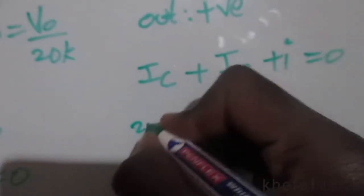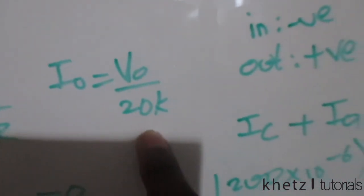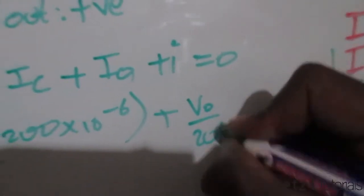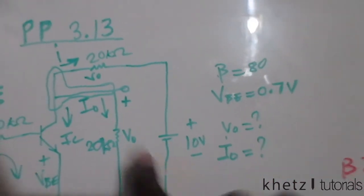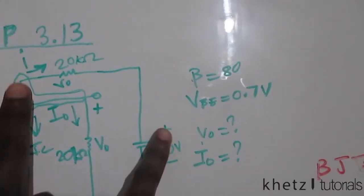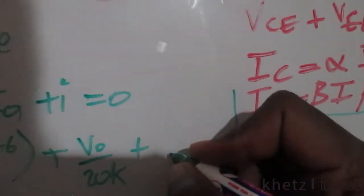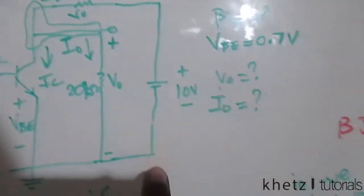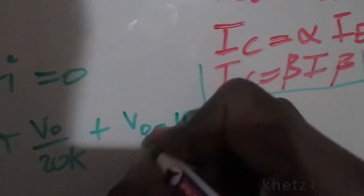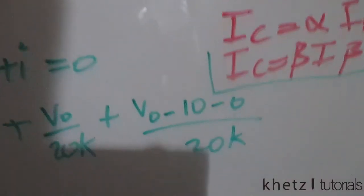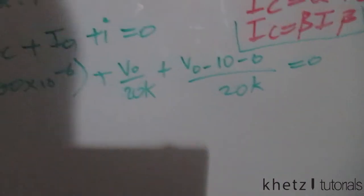Substituting: Ic is 200 microamperes; Io equals Vo divided by 20k (from our earlier relationship); and the current i equals Vo minus 10 volts minus ground, all divided by the resistor in that branch. The equation becomes: 200µA + Vo/20k + (Vo − 10)/10k = 0.